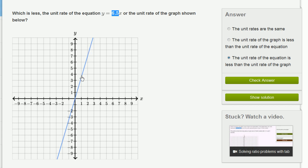So this line is increasing at a slower rate than this equation. Or y in this line is increasing at a slower rate with respect to x than y is increasing with respect to x in this equation right over here. So the unit rate of the graph is less than the unit rate of the equation.